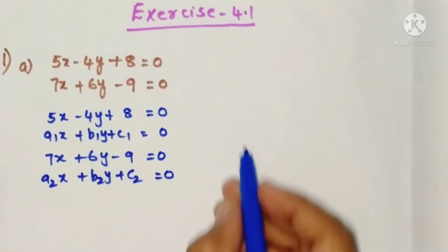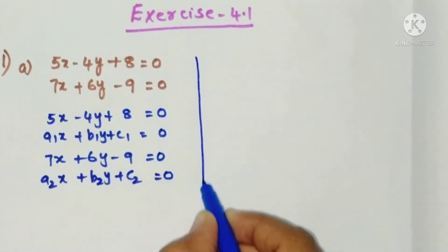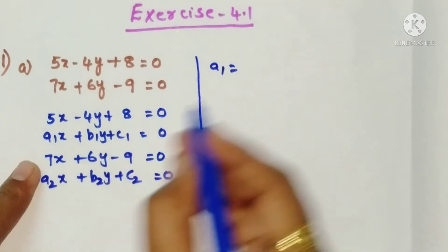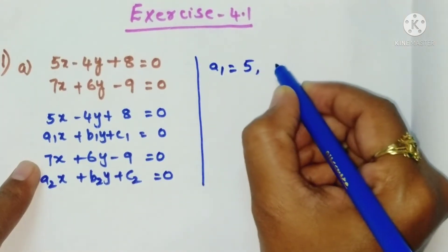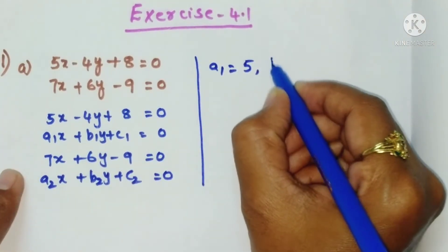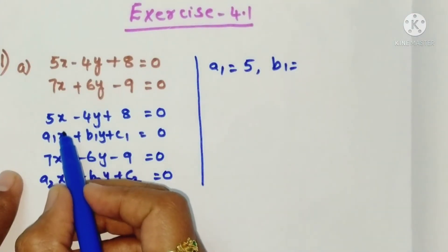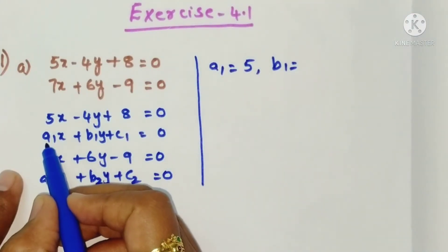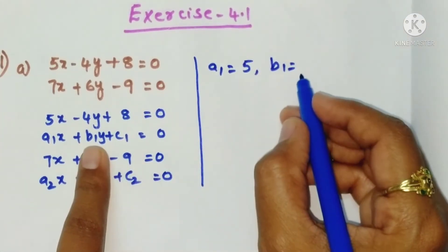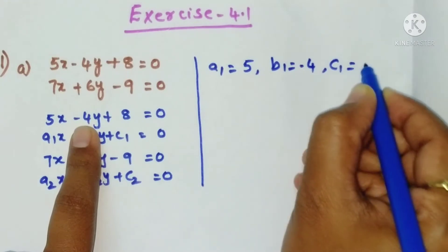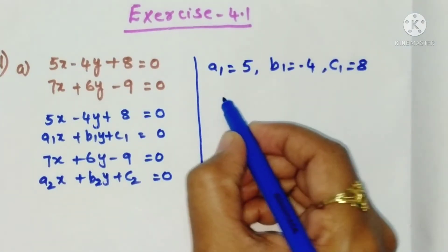Now just write a1. a1 is nothing but the coefficient of x, which is 5. And b1, coefficient of y—sorry, here a1 is nothing but the coefficient of x. b1 coefficient of y is minus 4, c1 is 8.